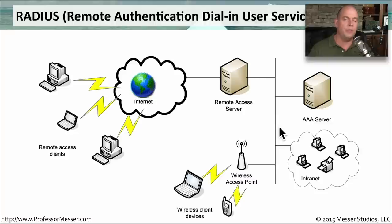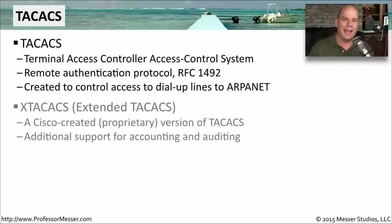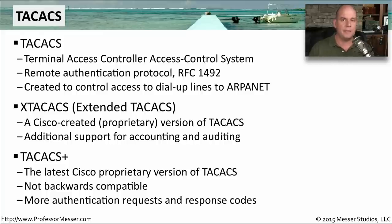RADIUS is not the only way to do this, however. There are generally two camps when discussing protocols that allow a remote access device to communicate to a AAA server: RADIUS and TACACS. TACACS stands for Terminal Access Controller Access Control System, defined in RFC 1492, going back to the ARPANET days. Cisco extended this older protocol and called it Extended TACACS, or X-TACACS, adding accounting and auditing to make it a true AAA mechanism. Cisco then improved it again with TACACS Plus — the latest version — which is not backwards compatible with earlier versions but has many more request and authorization capabilities.